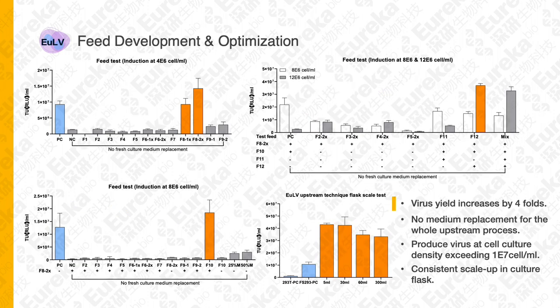This slide shows data from our feed optimization study. We achieved two goals: first, a fed-batch process without medium exchange; and second, suspension culture at high cell density over 10 million cells per mL. With this feed, the virus yield was increased by four times, medium exchange is not required, and this fed-batch process was stable when tested from 5 mL to 300 mL in a shaking flask.